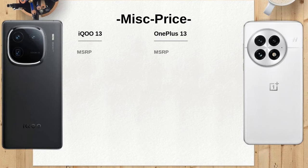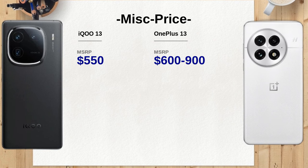The iQO13 is equipped with gaming-centric features such as an AI eSports signal engine and advanced cooling systems, ideal for gamers. Meanwhile, the OnePlus 13 includes AI Voice Summary and dual speakers for a more immersive audio experience, appealing to media consumers. The iQO13 is priced at approximately $550, while the OnePlus 13 ranges from $600 to $900. Depending on your budget and priorities, the iQO13 may offer better value, while the OnePlus 13 could justify its higher price with additional features and optimizations.